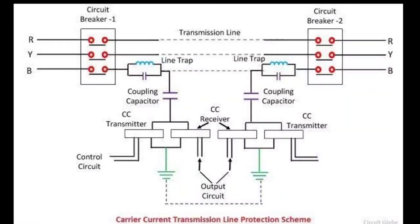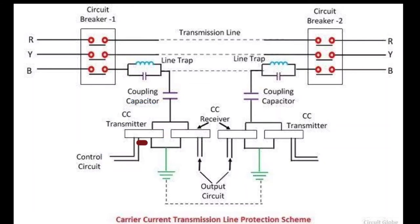The main elements of carrier current protection are: one transmitter, one receiver, coupling equipment, and a line trap. What is a line trap? The carrier current receiver receives the carrier current from the transmitter at the distant end of the line.